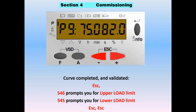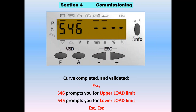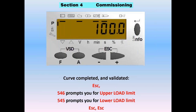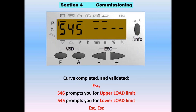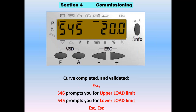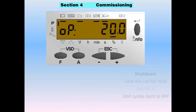Once the curve is completed and validated, press escape to get parameter 546 — it's asking for load limits. 546 is your upper load limit, 545 is your lower load limit. Go to 546, hit enter, get dashes, adjust to 100%, hit enter. Escape, and you see 546 with its value — just a parameter and a value, no index. Then press plus to get prompted for 545 — your lower load limit. Hit enter, adjust to 20%, hit enter, press escape. Now 545 has a value of 20. Escape and escape — now you're in operation at 20%, at the mercy of your load controller.